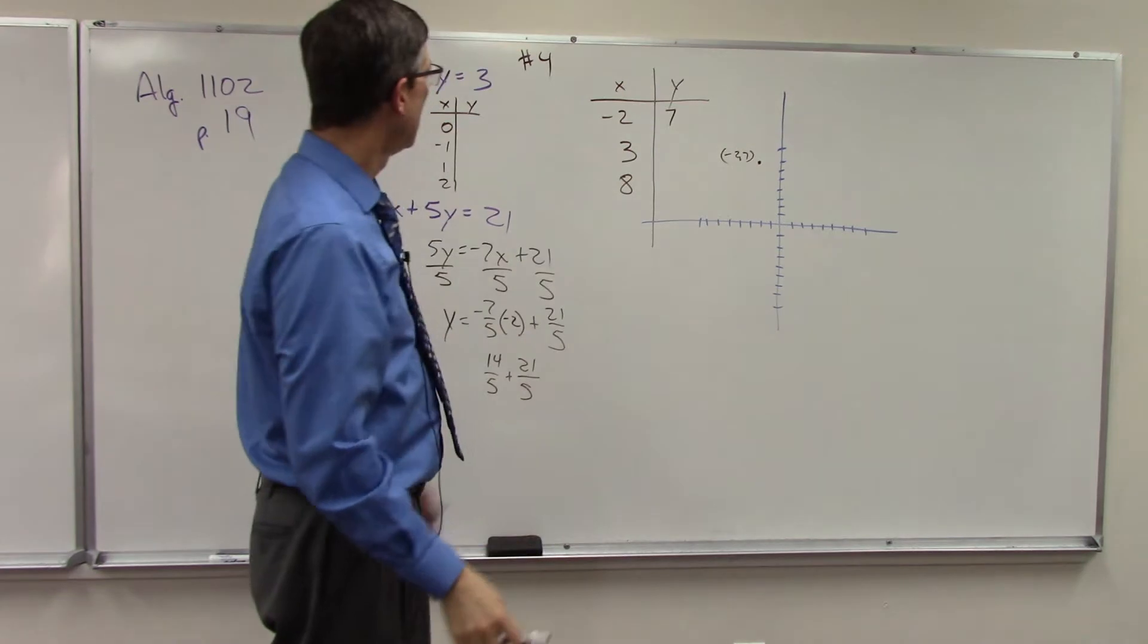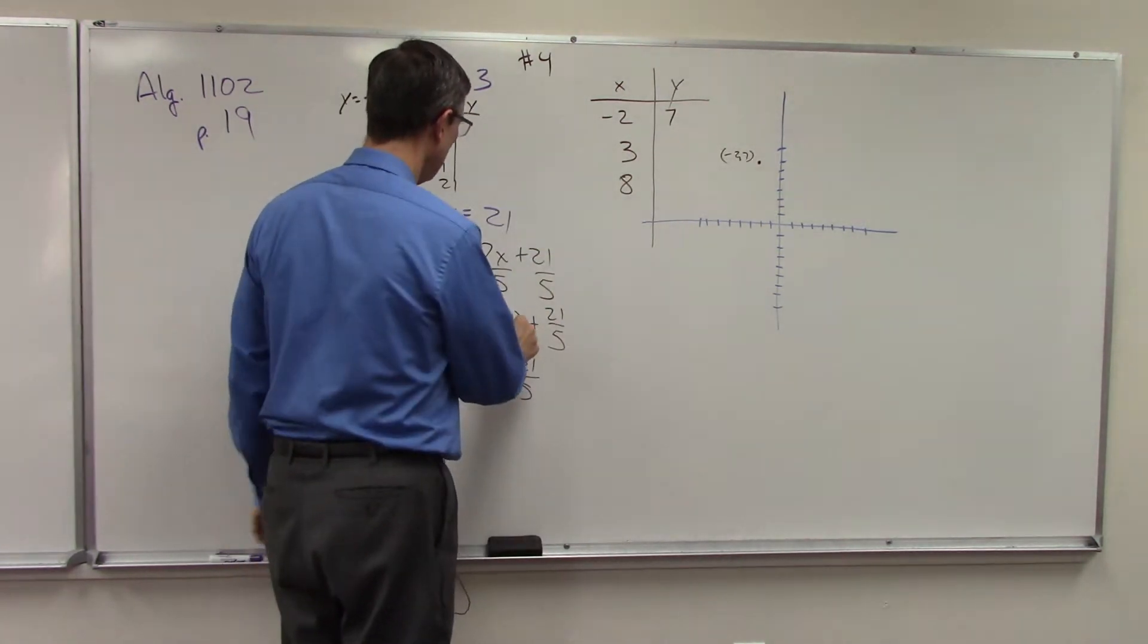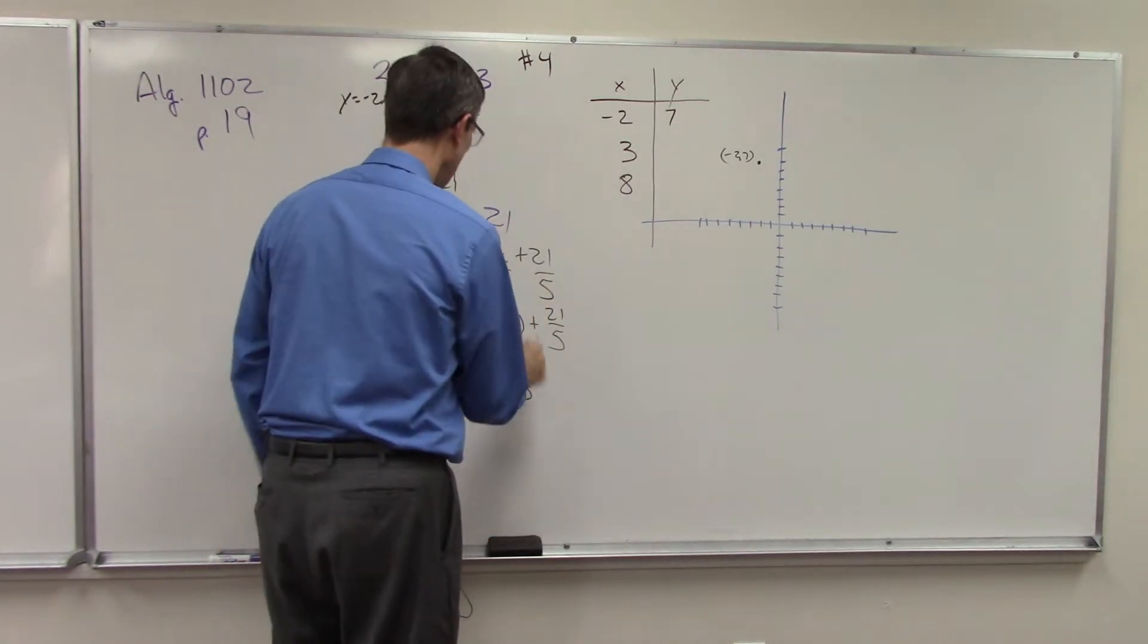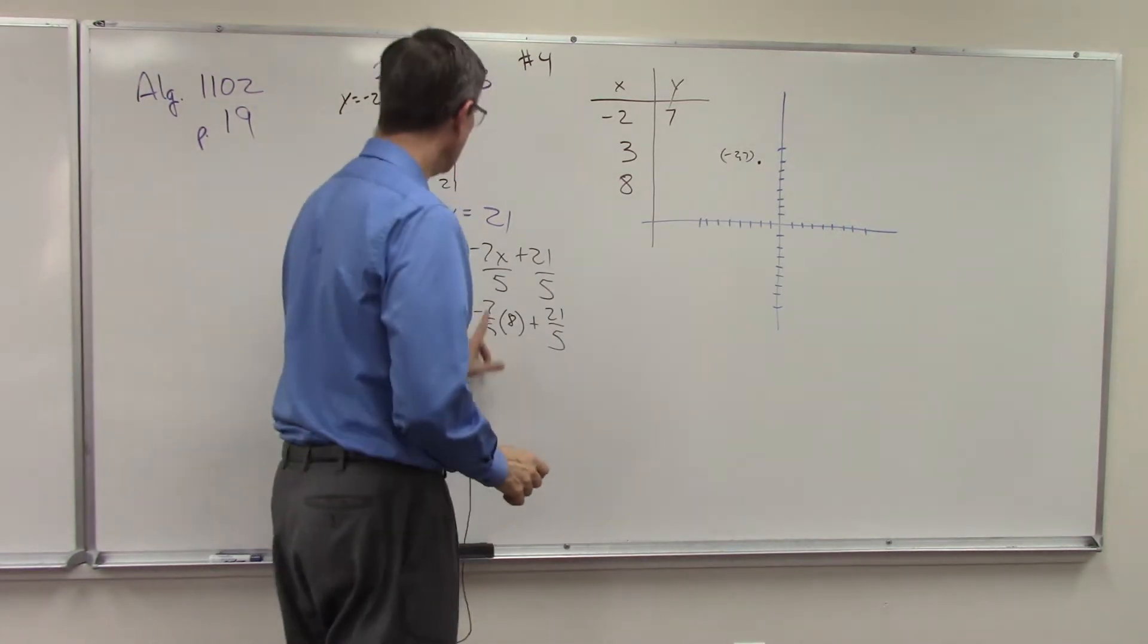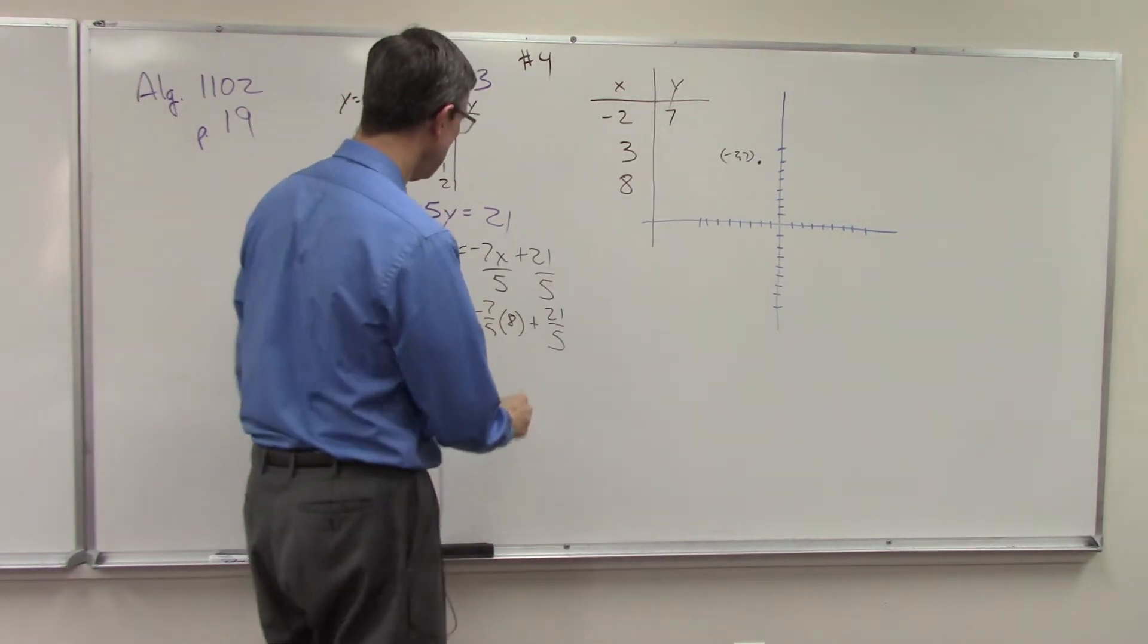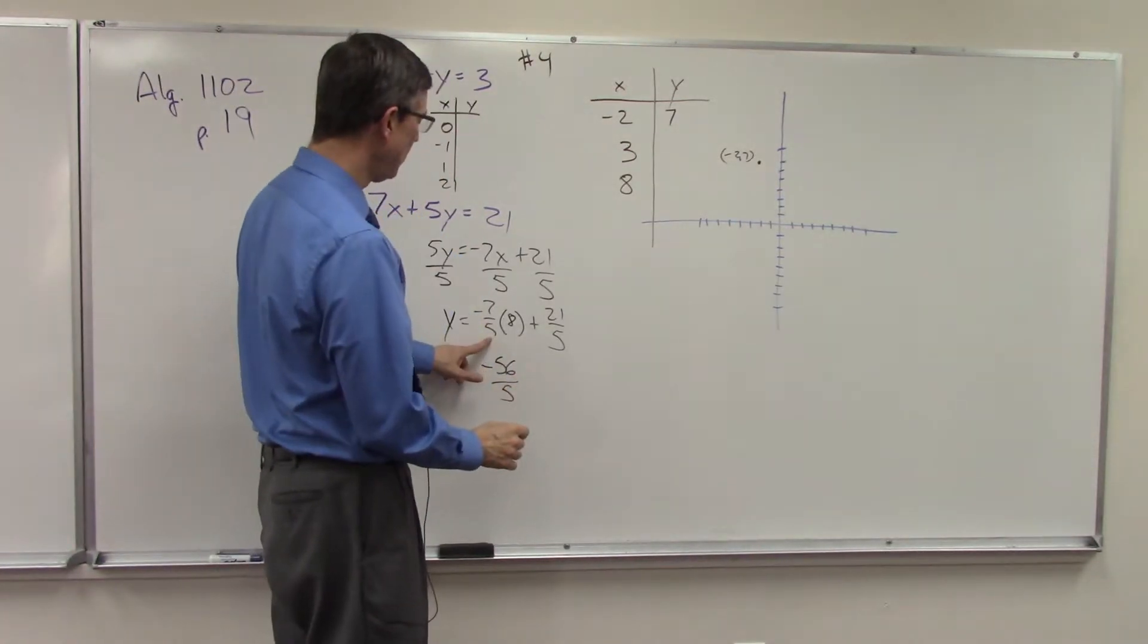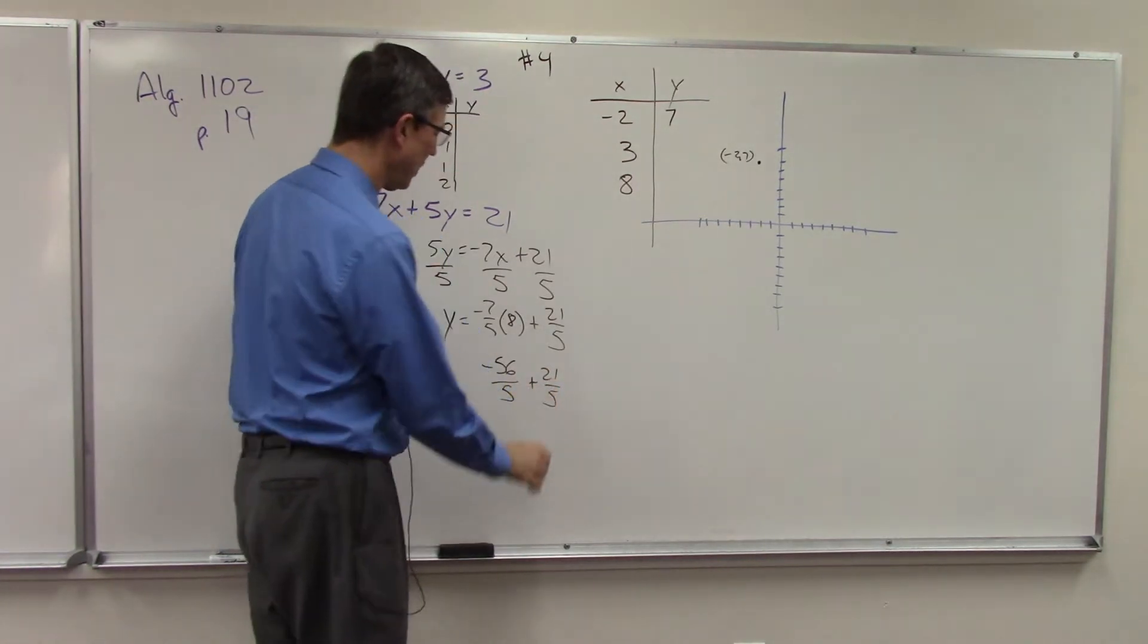And then let's plug in positive 3 and see what happens. That one's kind of a fun one. Actually, I'm going to let you do that one on your own because that's pretty easy. Let's choose the tougher one of 8. So 7, negative 7 times 8 is negative 56, and we keep the denominator of 5 plus 21 over 5.